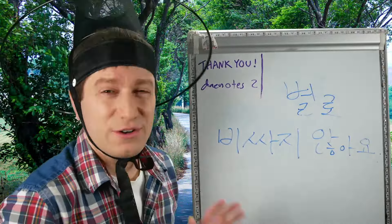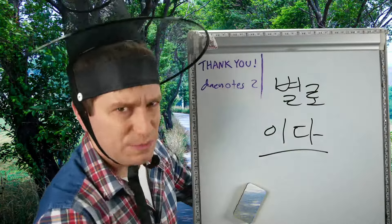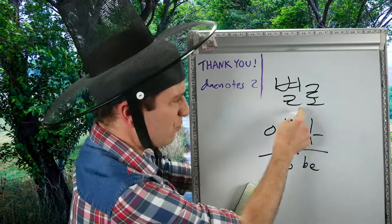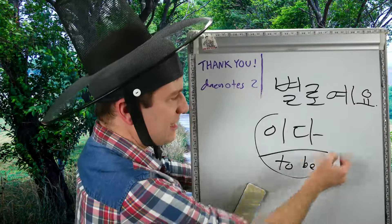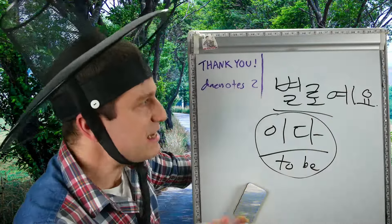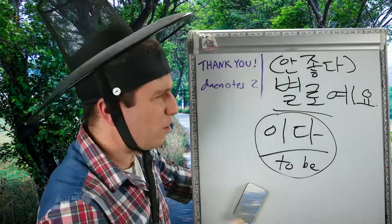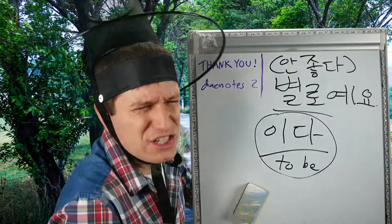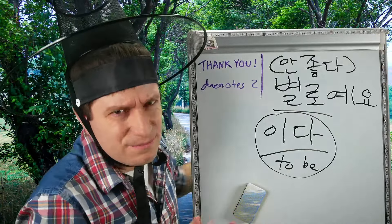There's one more thing about 별로. Not only is it used with negative verbs — 별로 can also be used with the verb 이다, just to be: 입니다, 예요. You can say 별로예요, for example. Literally, it is 별로. This is a way to say that something is not really good. So 별로예요 means it's not really that good, not especially good — it's just so-so. Meh. 별로예요 — it's not that great.